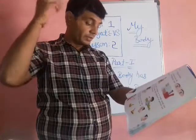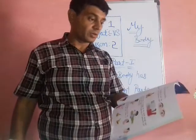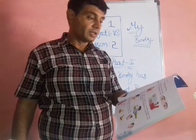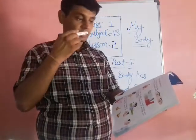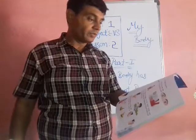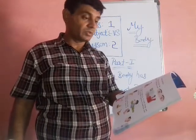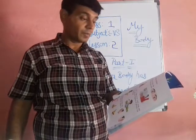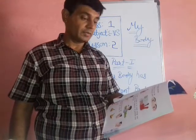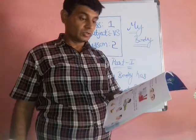The various parts of our face are our sense organs. We have 5 sense organs: eyes, nose, ears, tongue, and skin. We have two eyes. Eyes help us to see. We can read books and watch television with the help of our eyes.